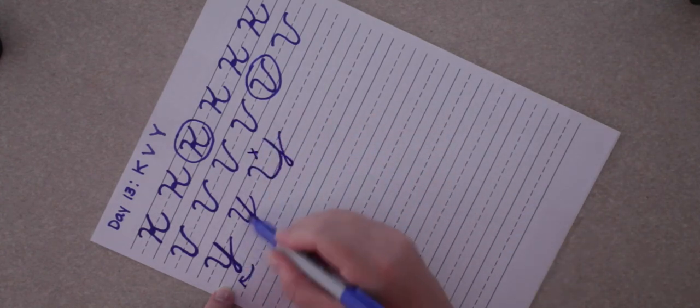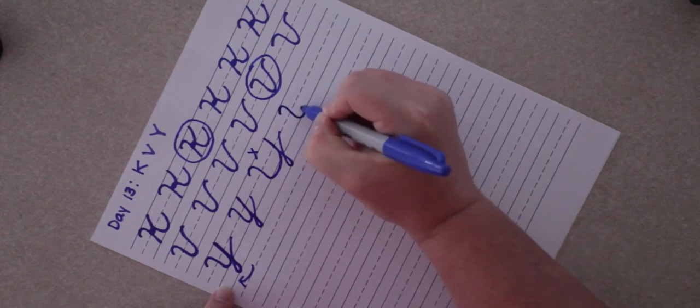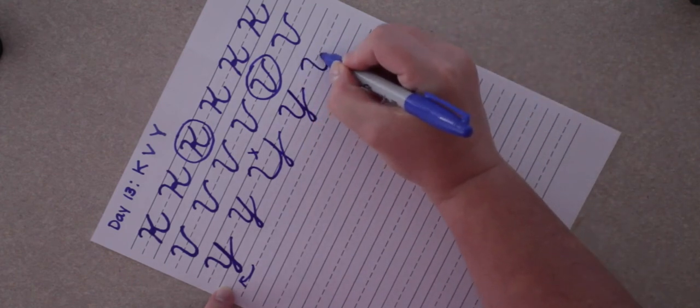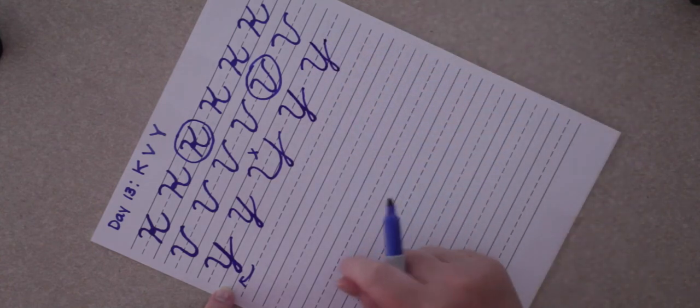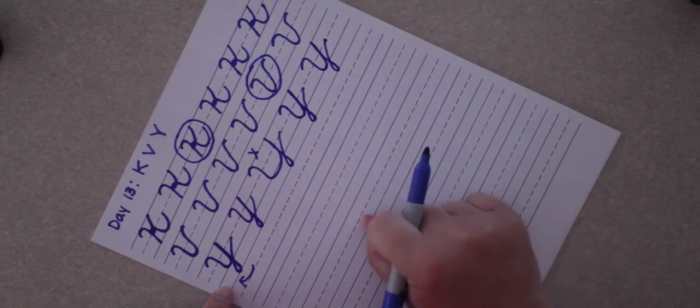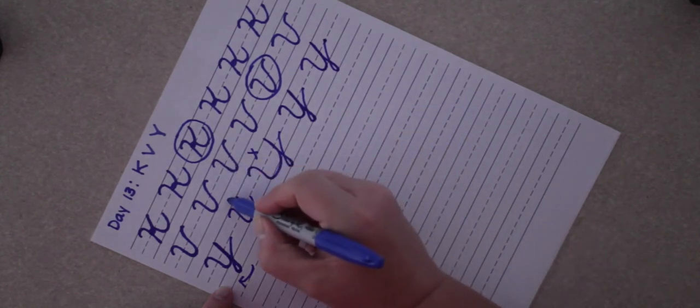So try to make it more narrow. You can pause this video and make a row of capital Y and then find your very best one and circle it.